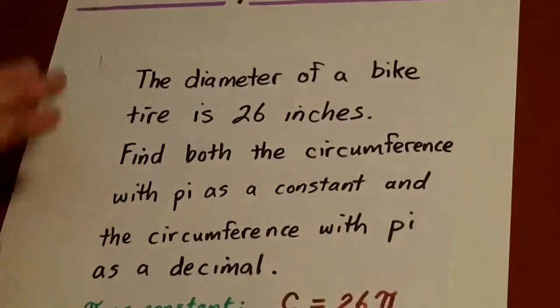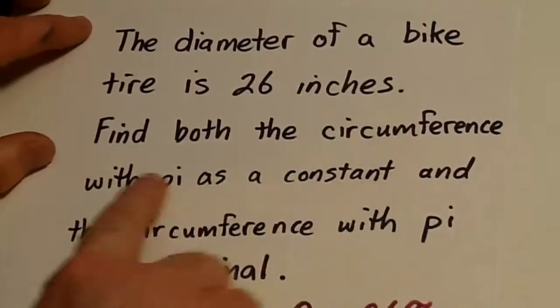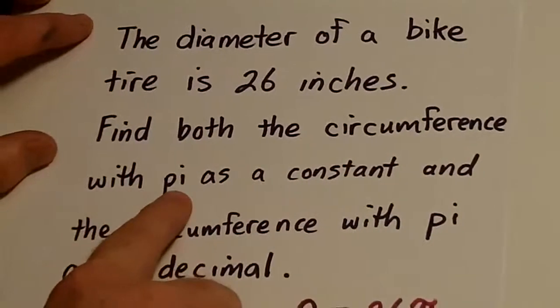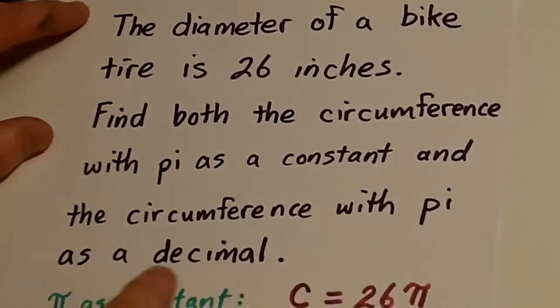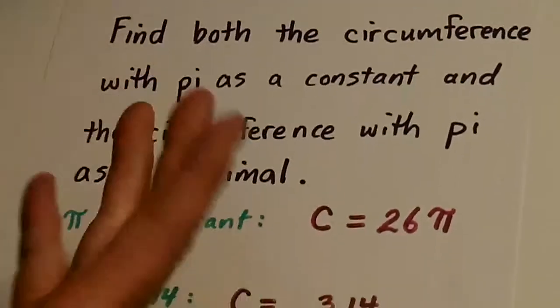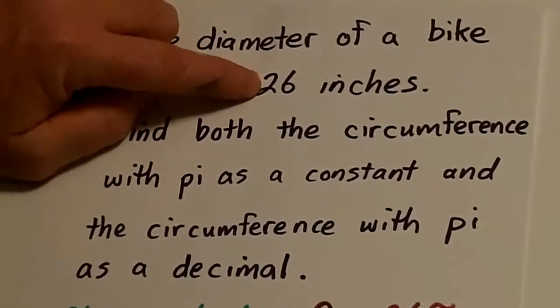Now, let's say here's a problem. The diameter of a bike tire is 26 inches. Find both a circumference with pi as a constant and the circumference with pi as a decimal. So this is a common word problem and you just got to say, hey, the diameter is 26.